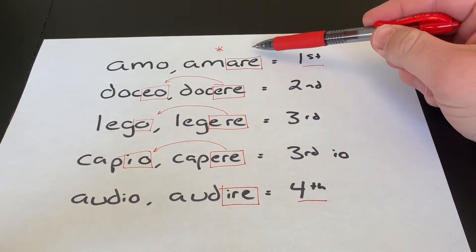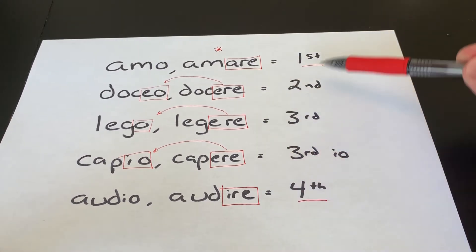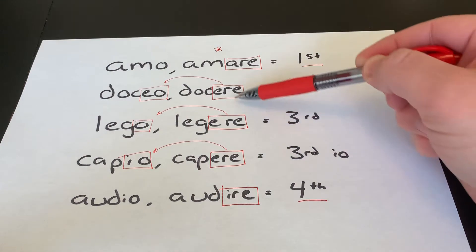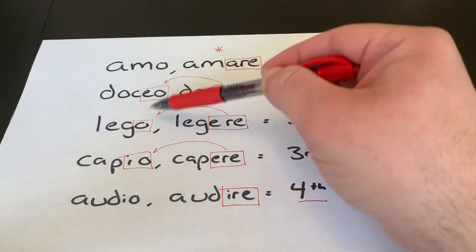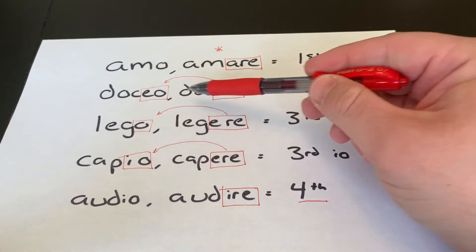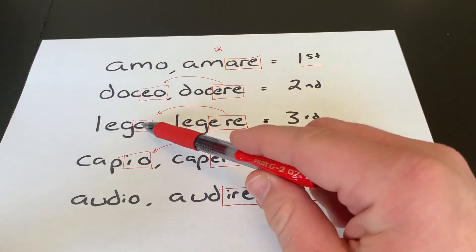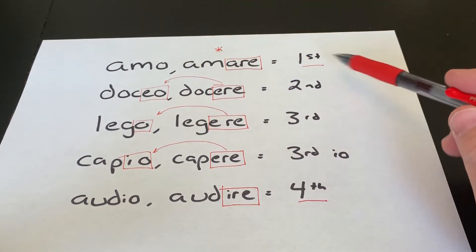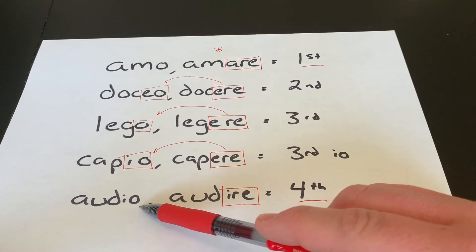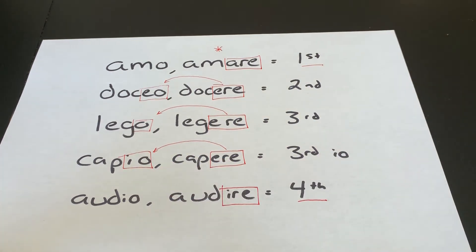To review: you first look at the second principal part, and that might give you enough information to identify the conjugation. But if it doesn't, then you look to the first principal part. It's important that you don't start with the first principal part, because if you do, you might see an O and think it's third when it's actually first, or you might see IO and think it's third IO. So start at the second principal part and then look at the first if you need to.